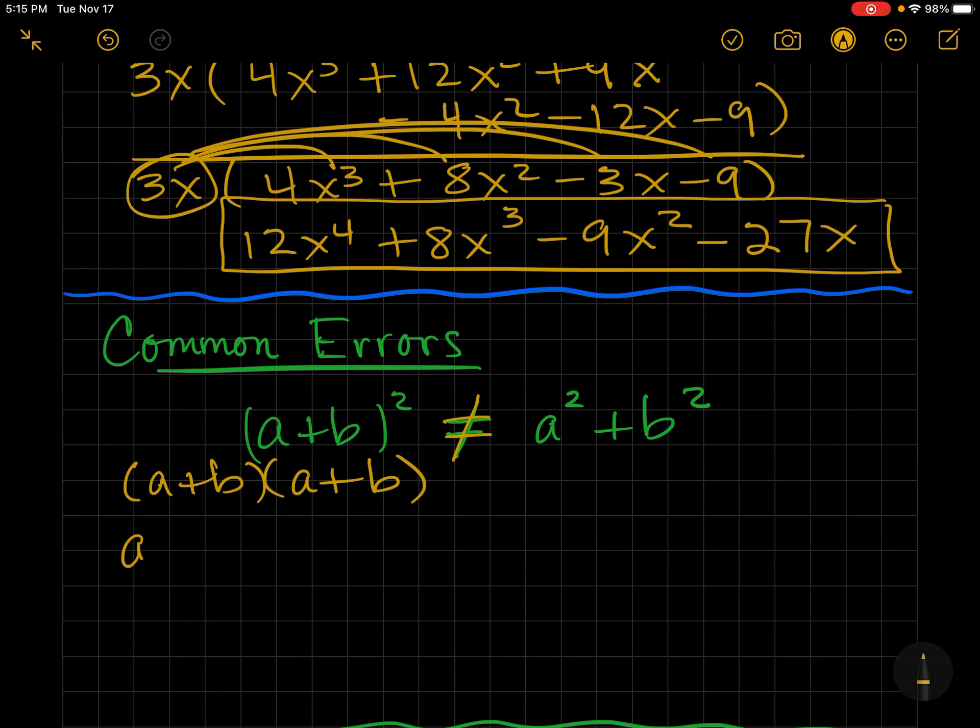...means this. And if I were to foil it, I'd get a², outer would be ab, and inner is ab. So there's two ab's. And then last would be b². So notice that this a² + b² is missing this term here.